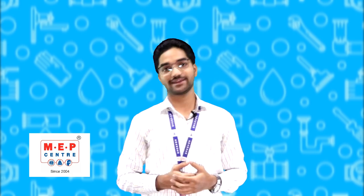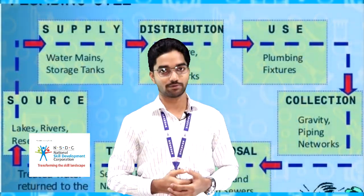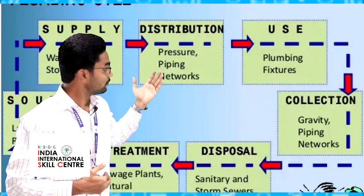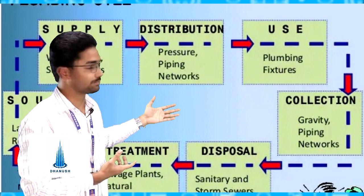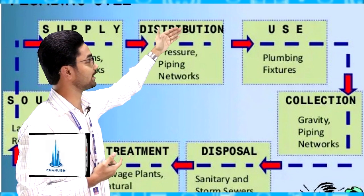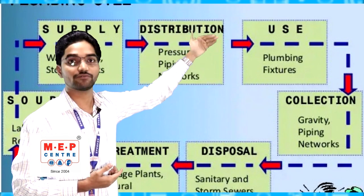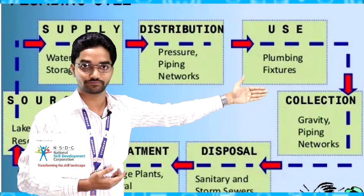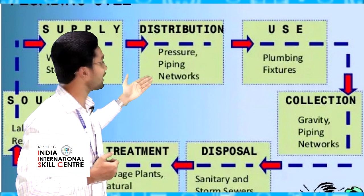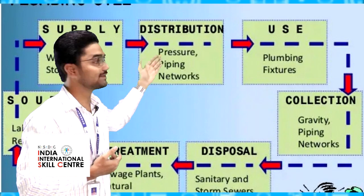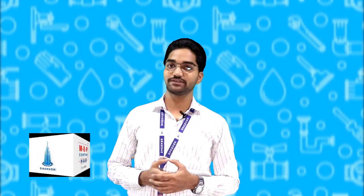The plumbing cycle works like this: water from reservoirs, lakes, and rivers is supplied to the main tanks in our building — that is the overhead tank and underground tank. Then water is distributed to the plumbing fixtures where it is used and drained out via pipes to the disposal point. From there, water is treated and sent back to the reservoirs, and this cycle continues — this is called the plumbing cycle.